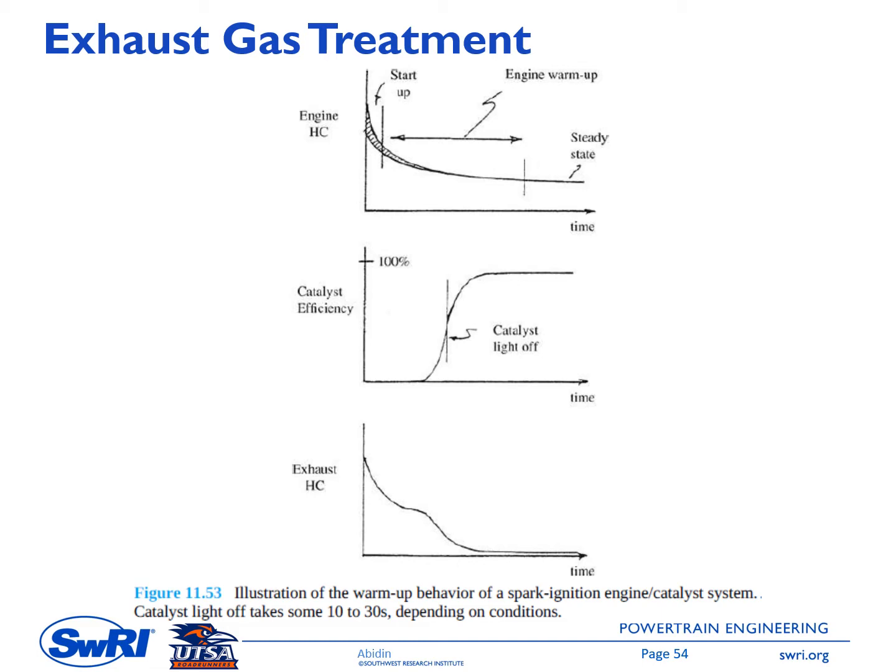The warm-up of the catalyst following a cold engine start is one key area. The catalyst surface must reach a temperature above around 300°C to become effective, and the exhaust gas flow and temperature are the available sources of thermal energy. This feature illustrates the warm-up of an oxidation catalyst and its evolving impact on engine-out HC emissions. During the starting and warm-up of a spark ignition engine, the engine HC emissions are higher, and they become lower once the engine is warmed up.